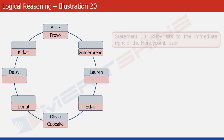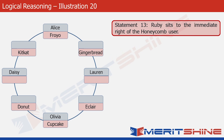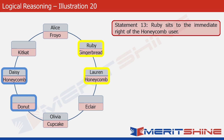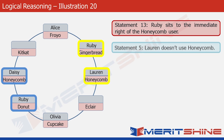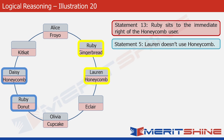Let's look at statement 13, which tells us that Ruby sits to the immediate right of the Honeycomb user. There are just two boxes in the structure where the operating system is not written. If we put Honeycomb in the first box, Ruby would occupy the next box to its right. That's one possibility. If we put Honeycomb in the second empty box, Ruby would occupy that corresponding position — that's the other possibility. Now statement 5 tells us that Lauren doesn't use Honeycomb. In the yellow box option, Lauren appears as the Honeycomb user — so that assumption is incorrect. We go with the blue boxes.